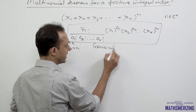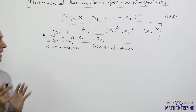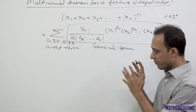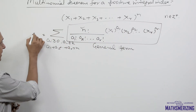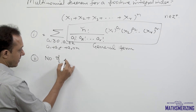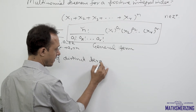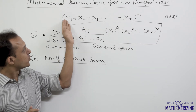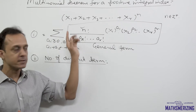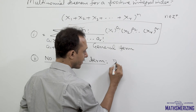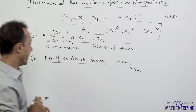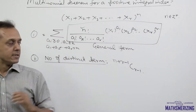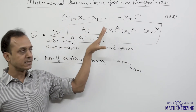This is the general term of the multinomial expansion. There can be two types of questions: either find the general term of any multinomial expansion, or use the general term to work out specific problems. The second common problem in multinomial theorem is the number of distinct terms. When variables x1, x2, x3, and xr are all different or unrelated, the number of distinct terms is given by (n + r − 1) C (r − 1).